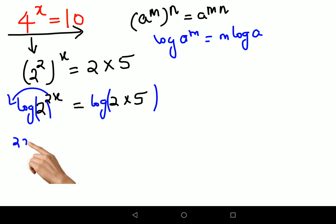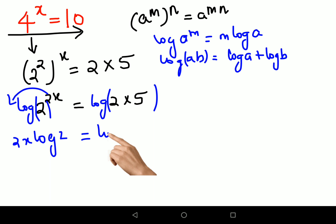So we have 2x into log 2. This will equal to now what? Log of a into b is nothing but log a plus log b. So this will be log 2 plus log 5.